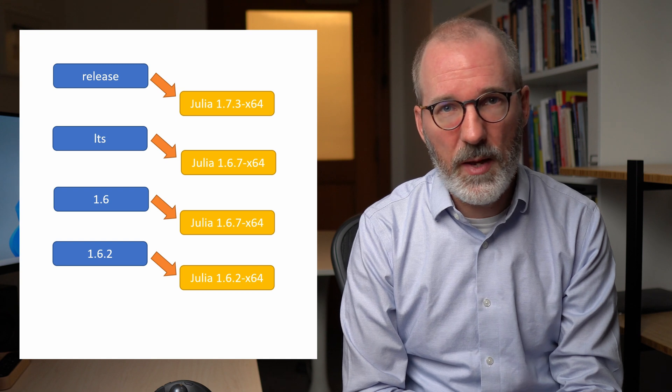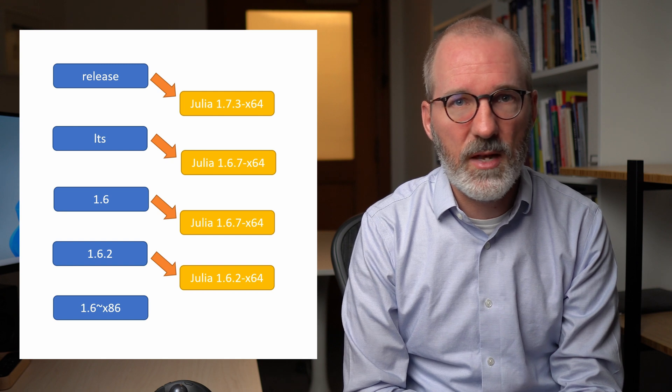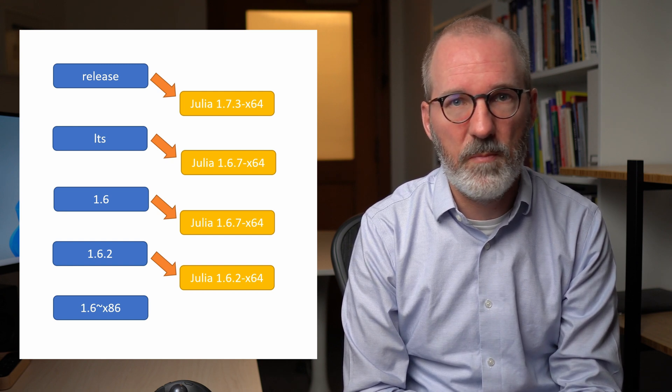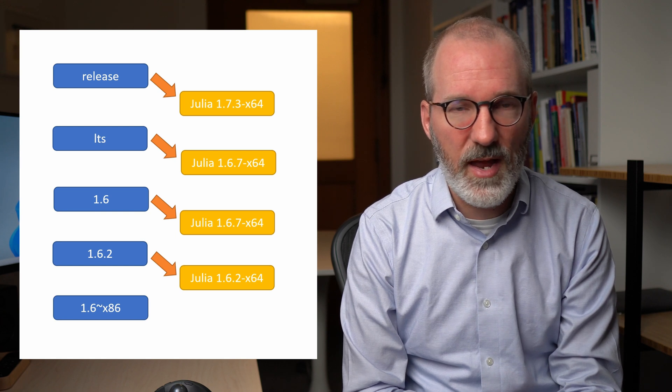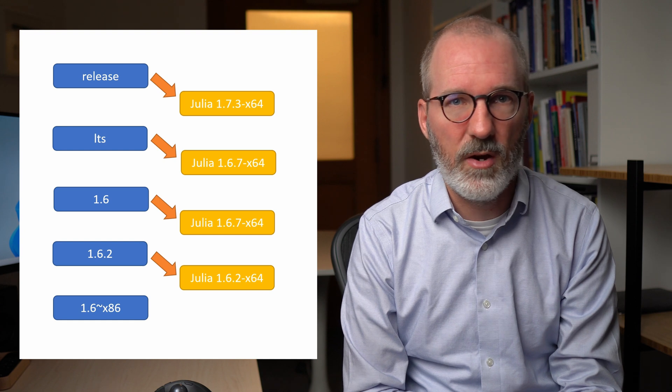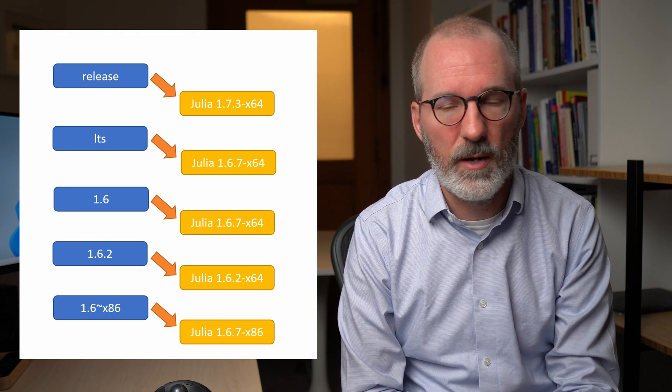You can also append a platform specifier to a Julia channel name. So here, for example, on Windows, I might be interested in installing a 32-bit version of Julia and I do that by using the channel name with a tilde platform specifier appended. And similar things also work, for example, on Macintosh if you are on an M1.